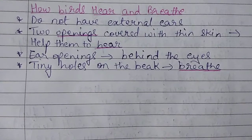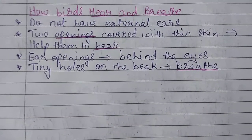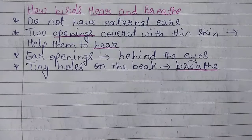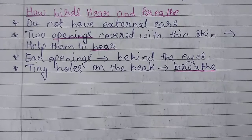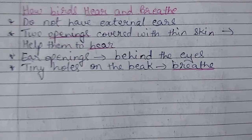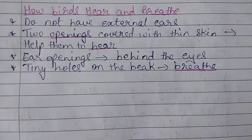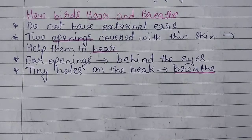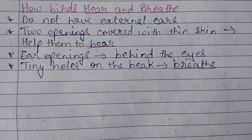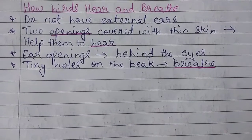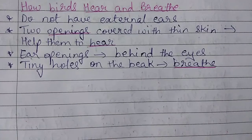These two openings are called ear openings, and they are located behind the eyes of the birds. You cannot see them because they are covered with thin skin. These two openings covered with thin skin help the birds to hear. So birds can hear — they have ears, but their ears are not external.